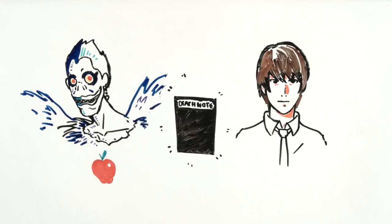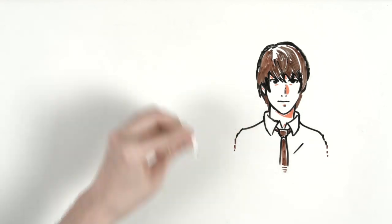Light begins to consider the possibilities of the Death Note's abilities and sets out to create a utopian world without crime, killing criminals around the world.